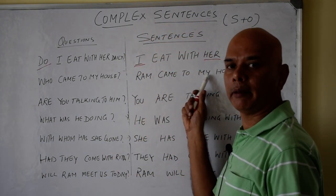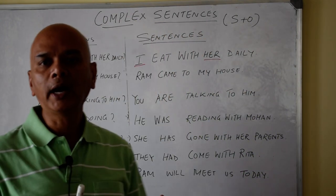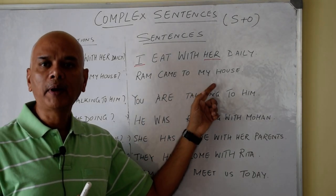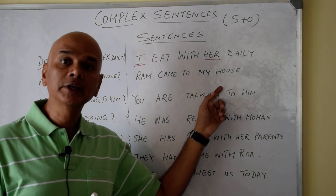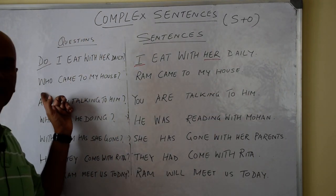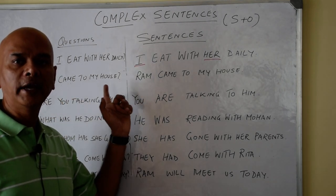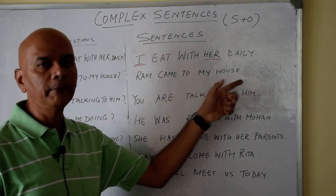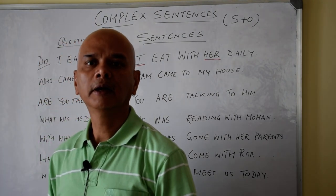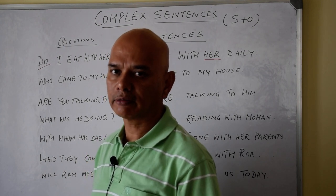Ram came to my house. Here 'Ram' becomes the subject and 'my house' becomes the object. The question can be: who came to my house? Answer: Ram came to my house. You see the form of the question is also changing as per practical usage.